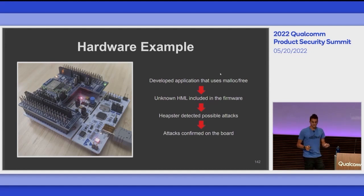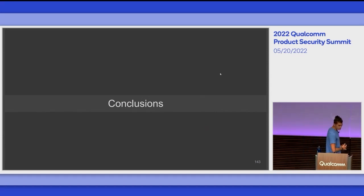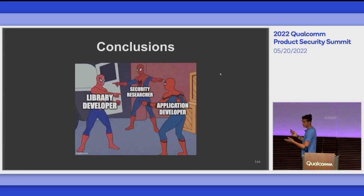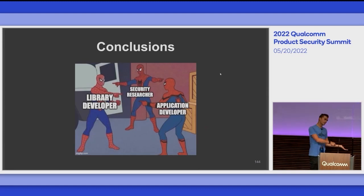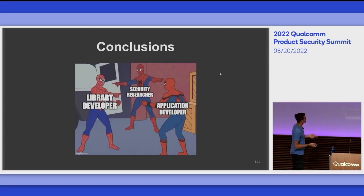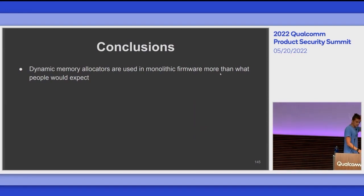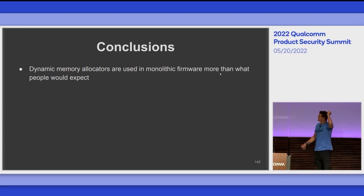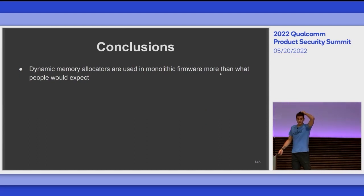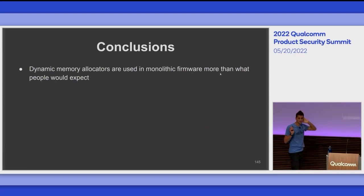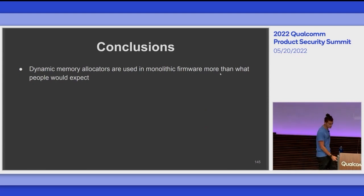Let me go through some conclusions. The current state of the discussion has library developers pointing to application developers saying they're misusing the heap API, while application developers point back saying the library should be hardened. Security researchers end up blaming both because the situation isn't getting fixed. Key takeaway: dynamic memory allocators are used in monolithic firmware images more than people would expect — I think this is a very interesting finding considering the pushback from the embedded developer community.